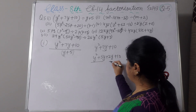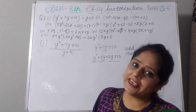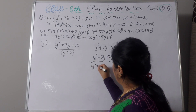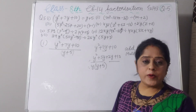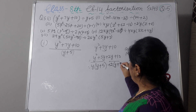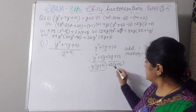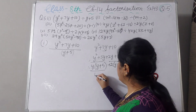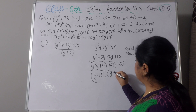Now I will make pairs of two terms. From y squared plus 5y, take y as common to get y(y plus 5). From 2y plus 10, take 2 as common to get 2(y plus 5). Now y plus 5 is common in both — take y plus 5 as outside, and internally you are left with y plus 2.